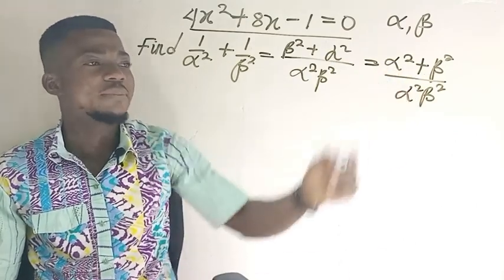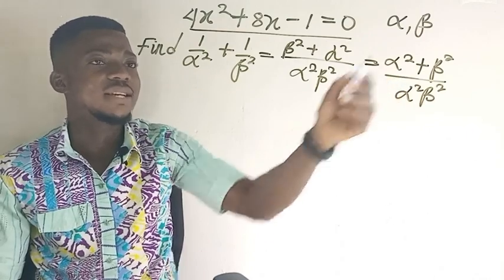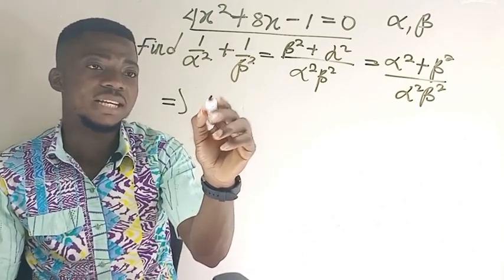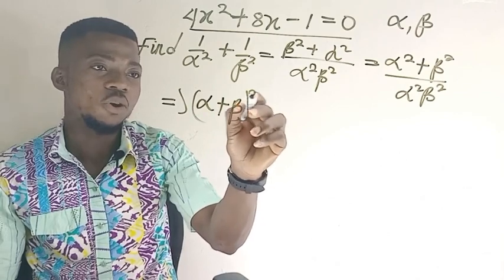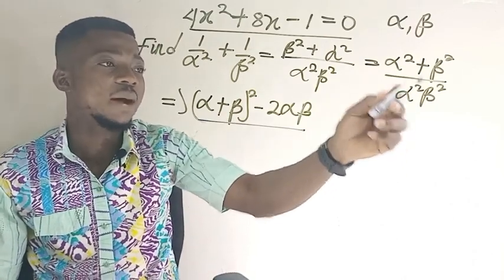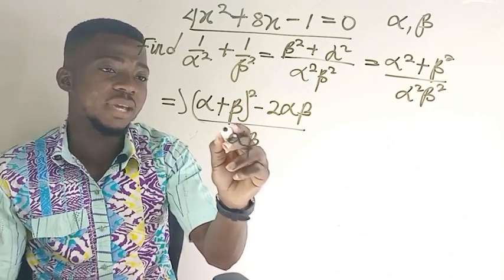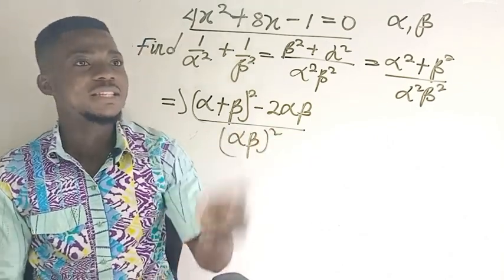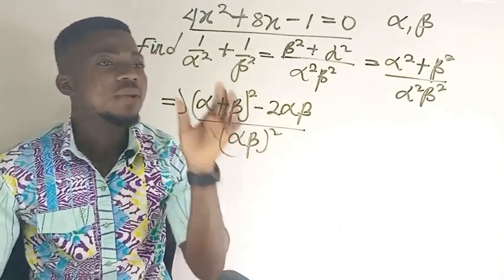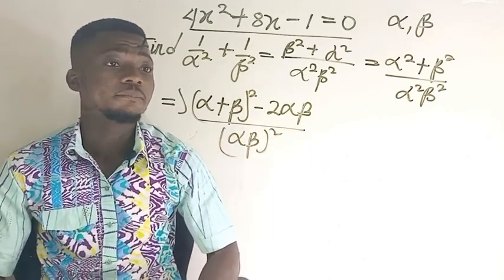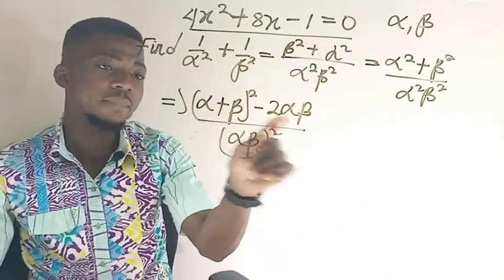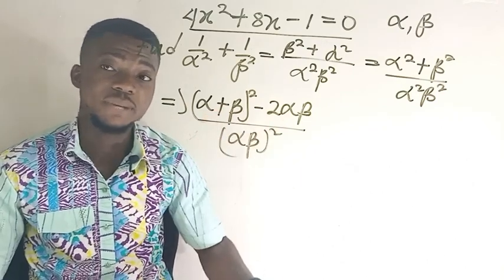Now, alpha squared plus beta squared is an identity, so we can write it in that form using sum and product rules. We're going to have alpha plus beta all squared minus 2 alpha beta, all over alpha squared times beta squared, which gives us alpha beta all squared. So this expression has now given us that form. We can solve this expression by going to find the sum and product of the roots and come and fix it in place of alpha plus beta and alpha times beta.